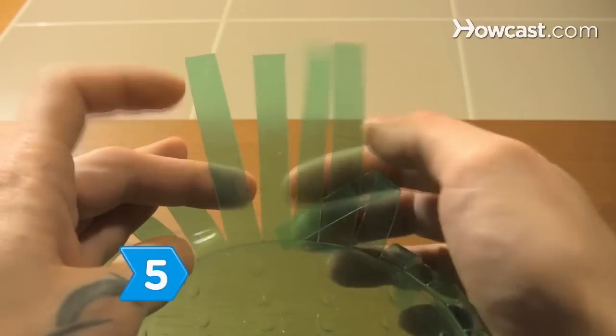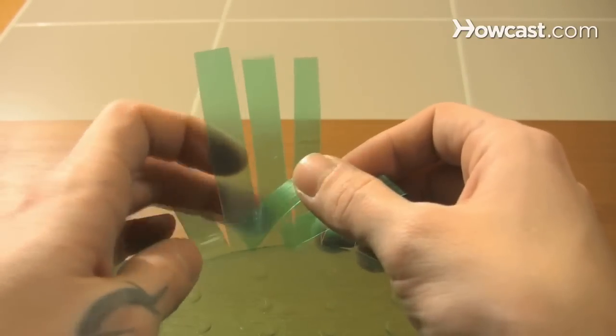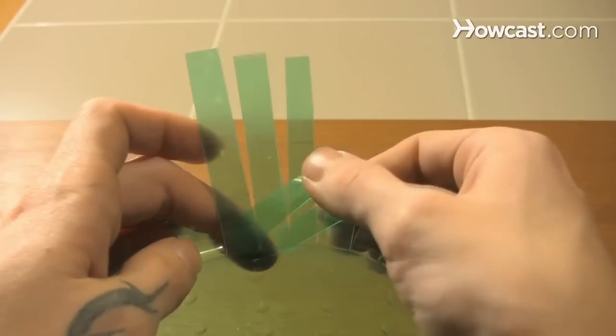Step 5. Bend and crease the strip you wove over with the first strip and fold it over the next two and under the following one.